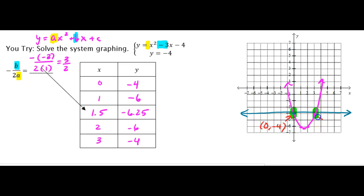And then this other point right here, it looks like 3, negative 4. So these two points right here are the solutions to this problem.